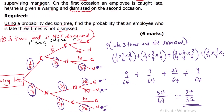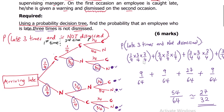So that's the probability. We've used the probability tree to answer the question: the probability that an employee who is late three times is not dismissed is 27/32.